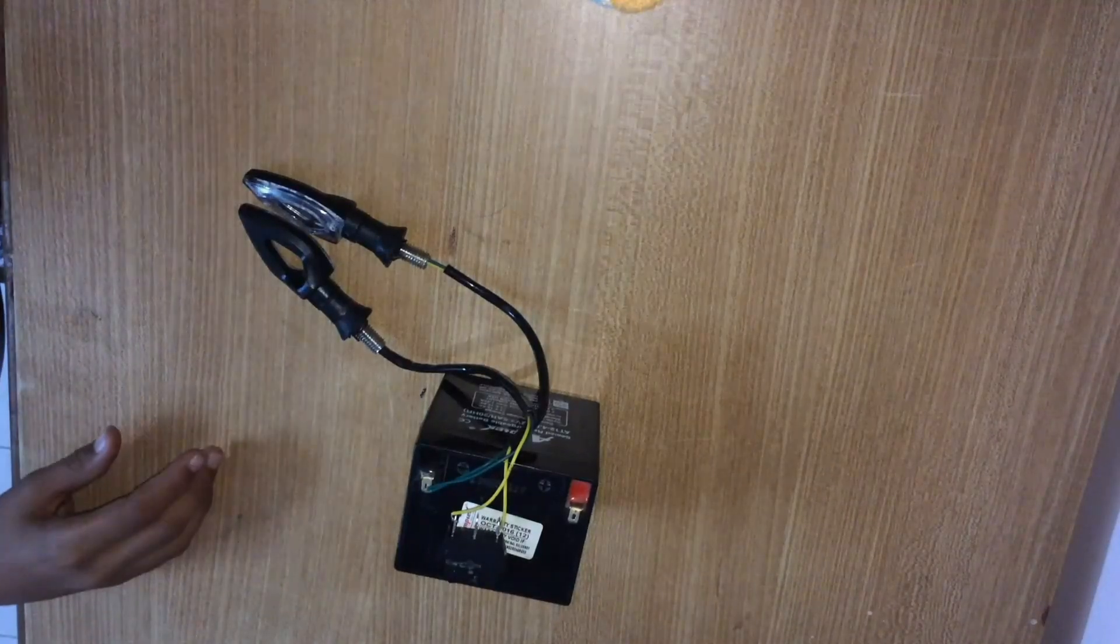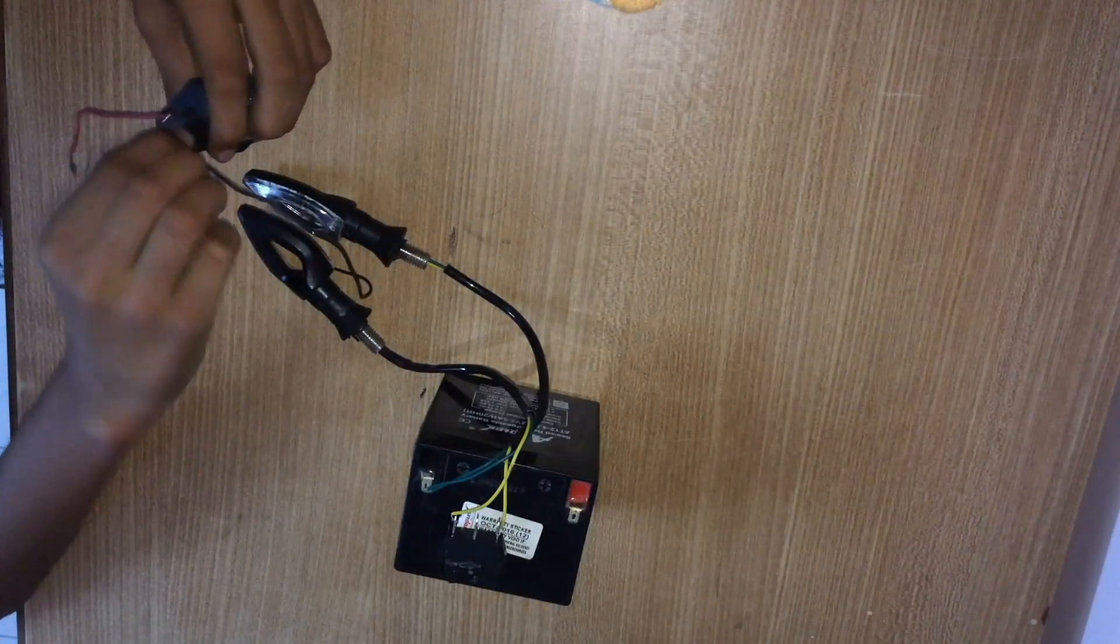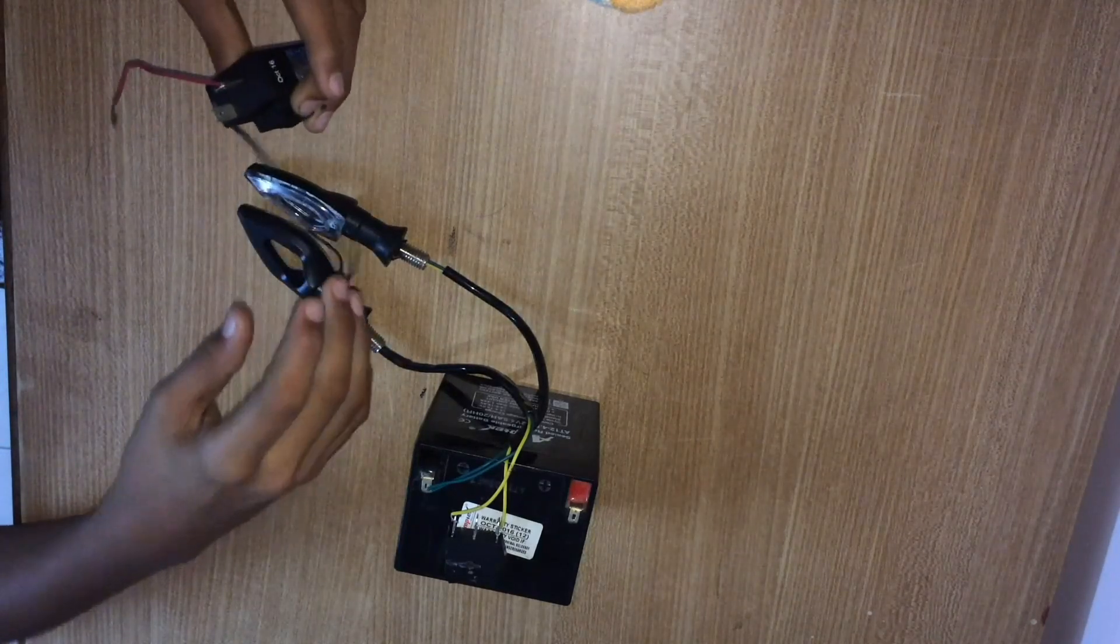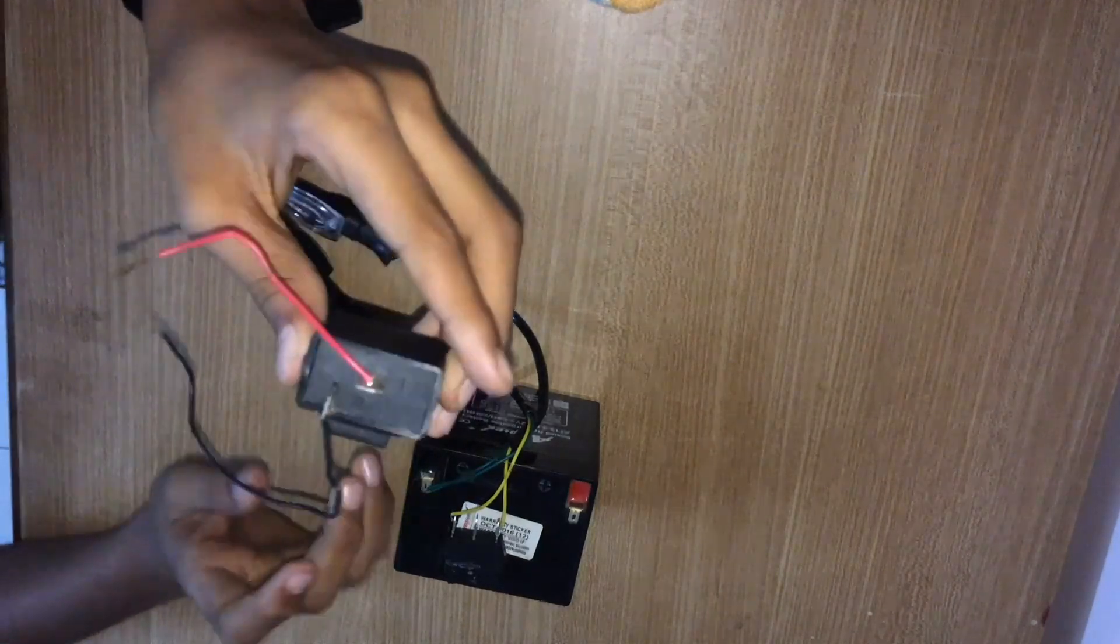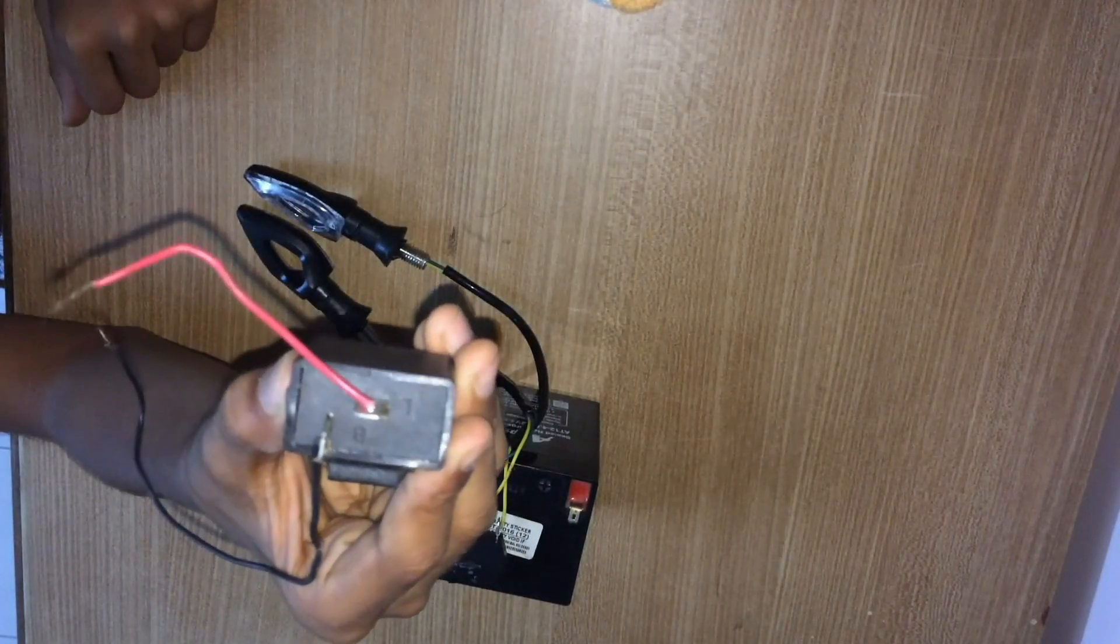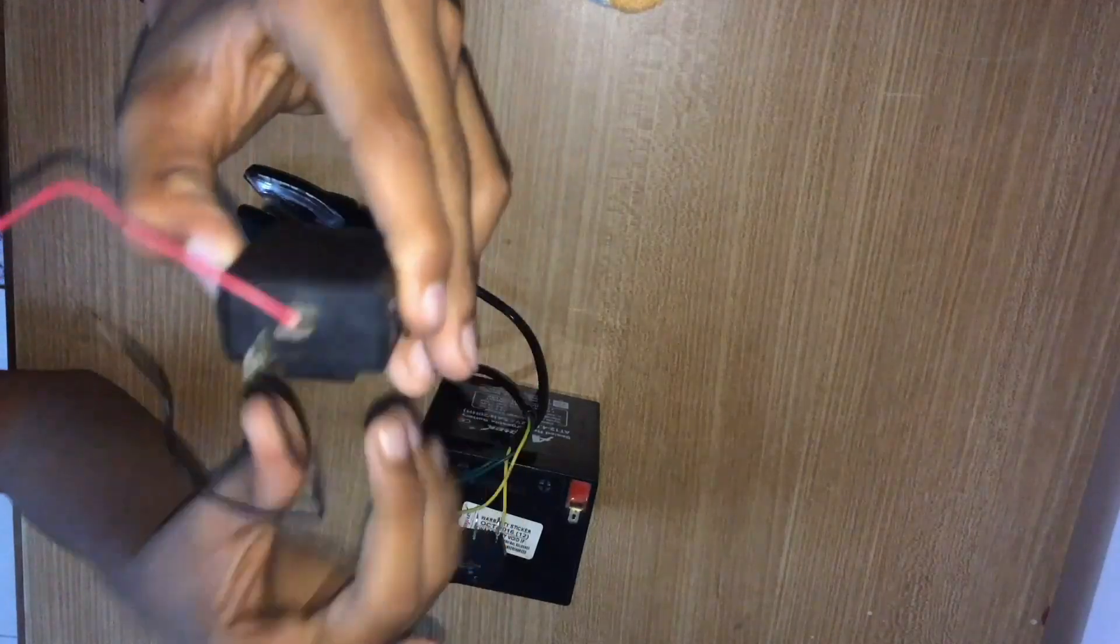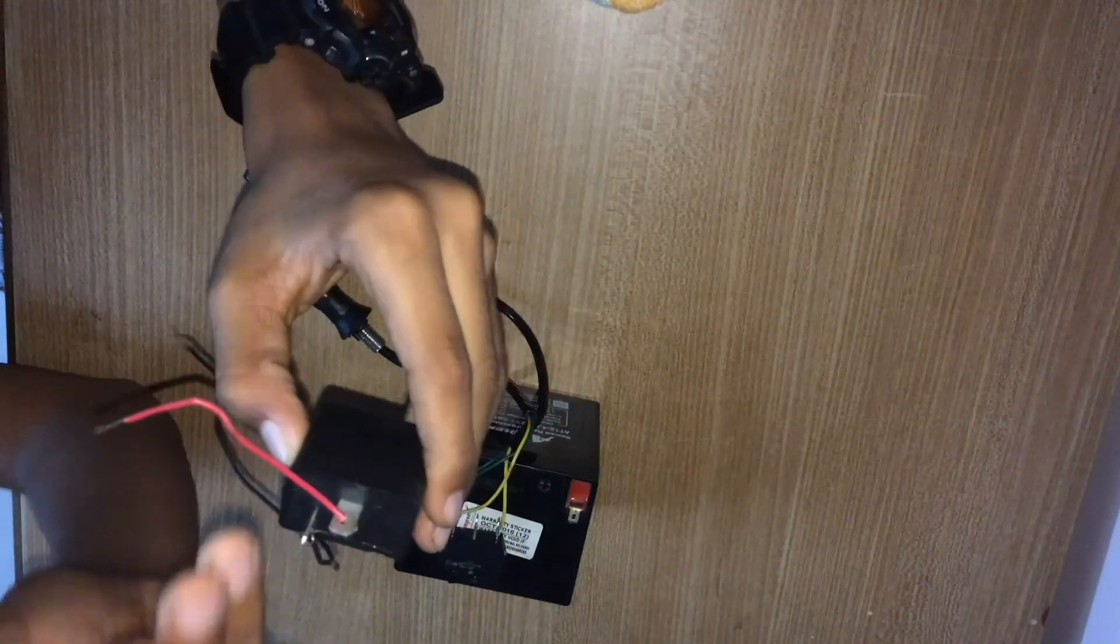Your relay should have two pins named L and B. The pin B should be attached to the positive terminal of the battery. The pin L should be attached to the middle pin of the 3-pin DPDT switch.